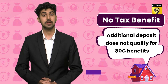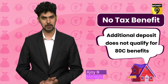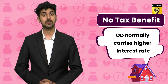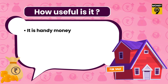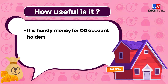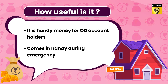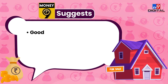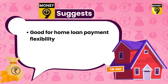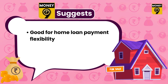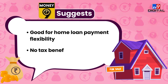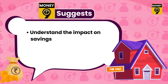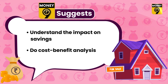This is because the excess amount deposited in the home loan account is not treated as principal repayment. Apart from this, the interest rate on home loan overdraft is usually higher compared to the regular home loan interest rate. Home loan OD is a kind of handy money for creditors. If there is an emergency or you want to buy a property and need a temporary fund, it can be used. Money9 suggests that home loan OD facility should be opted by those who need flexibility in payment and who are willing to pay higher interest rates. Also, it does not provide the benefit of tax deduction. If you are opting for a home loan OD, first understand how it will affect your principal savings, and assess the cost and benefit.